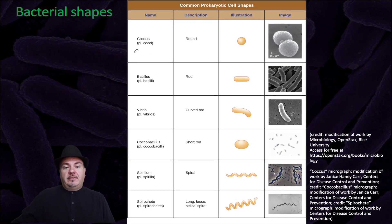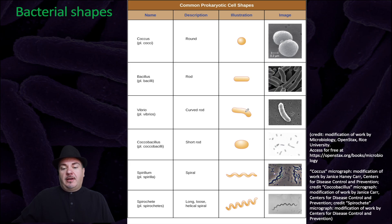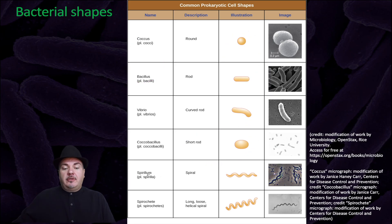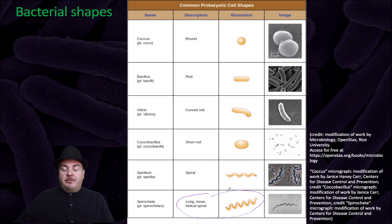In more detail: cocci or coccus are the round ones; bacillus or bacilli are the rod-shaped ones; vibrio are the curved rods; coccobacillus is a combination of those two shapes — it's a short rod; spirillum, which is spiral-shaped; and spirochetes, which are long, loose, or helical spirals.